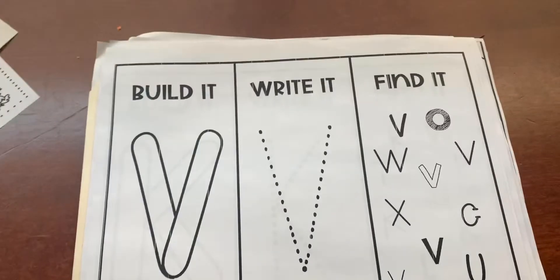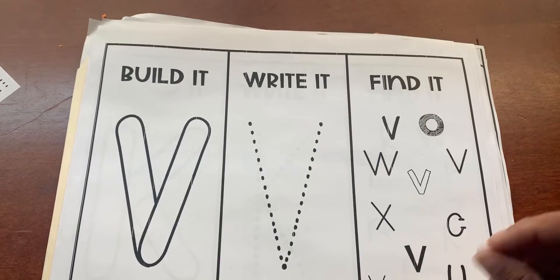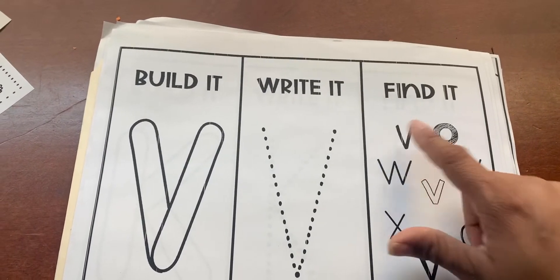Then they're going to trace it. And then here they're going to find the letter V and go ahead and circle it. Or if you want to roll some Play-Doh up or put a star on the letter Vs, you can.